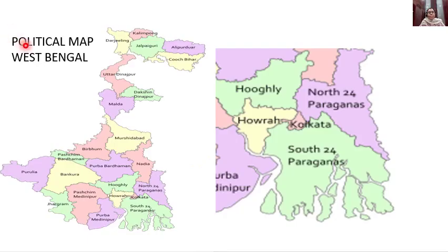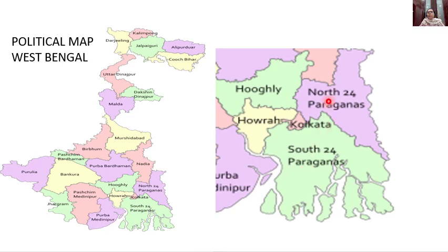Now children, try to understand this map. This is the political map of West Bengal, divided into different parts showing the names of each district. I have removed a small part to show you the neighboring districts of Kolkata. The neighboring districts of Kolkata are Howrah, South 24 Parganas, and North 24 Parganas.